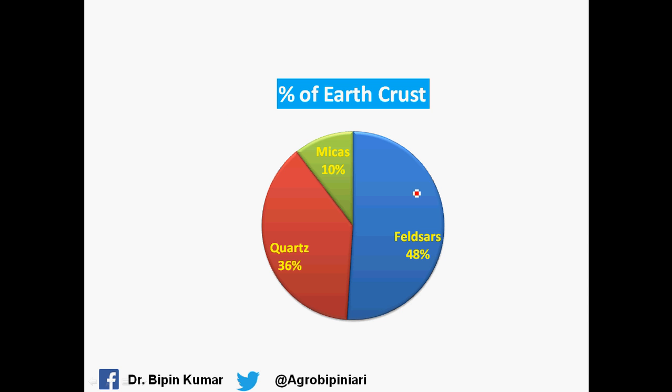The earth's crust is composed of these three minerals in this proportion: feldspar is 48%, quartz is 36%, and mica is 10%. These were some facts regarding these minerals.